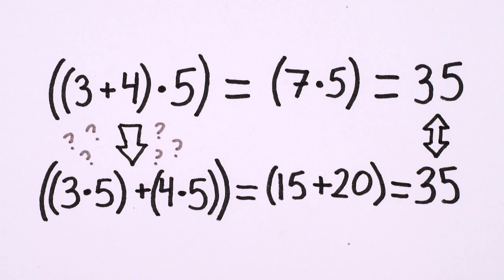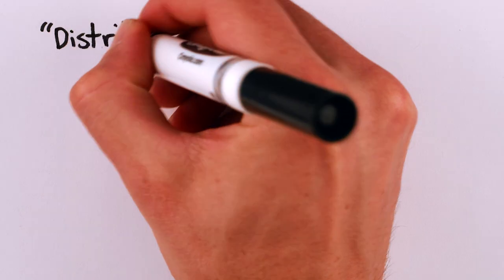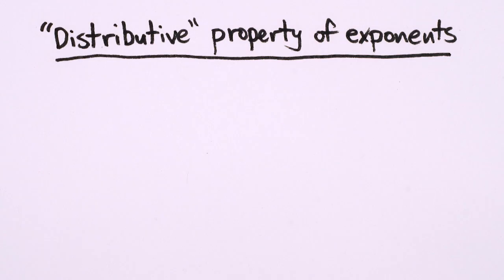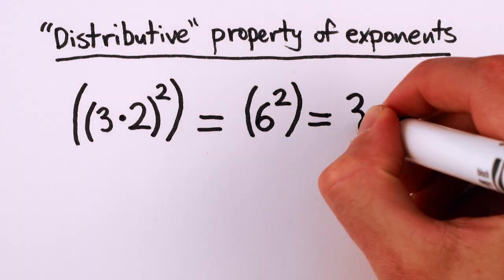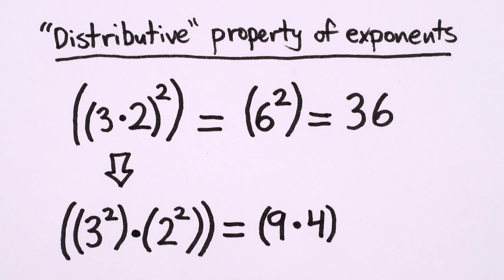One way is to draw rectangles, but I've done that before. The same rearranging can be done for exponentiation and multiplication. 3 times 2 all squared, or 6 squared equals 36, is the same as 3 squared times 2 squared, 36.